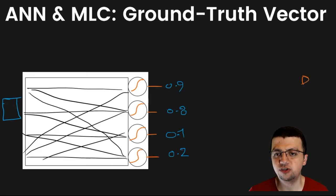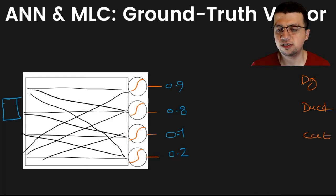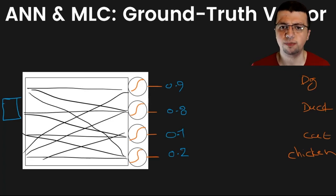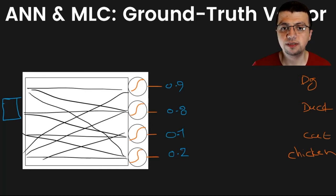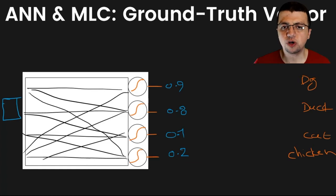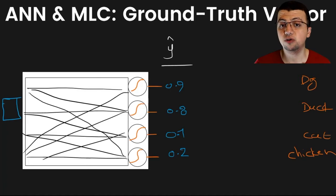Let's say this is the prediction vector for an input image in which two given animals are present. Your classes are: the first class is dog, the second class is duck, the third class is cat, and the last class is chicken. In that image, you have dog and duck present, so your input data belongs to the first and second class at the same time — hence multi-label classification. These output values are what we call y-hat, the prediction vector of your neural network.